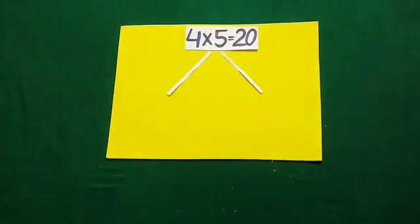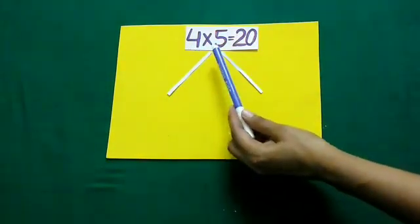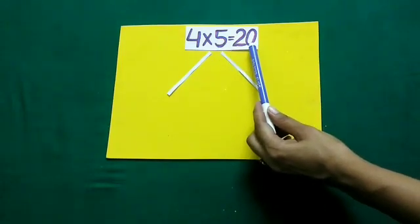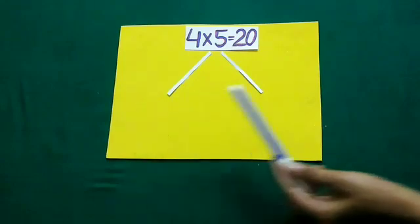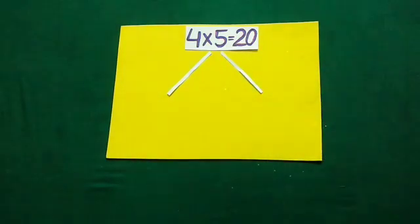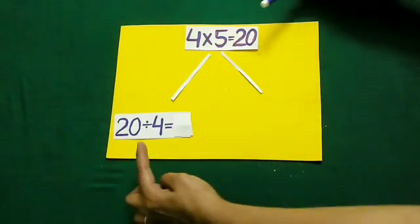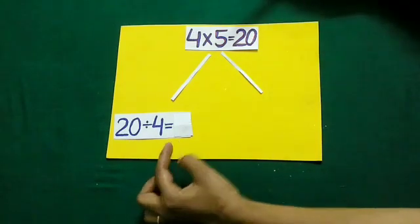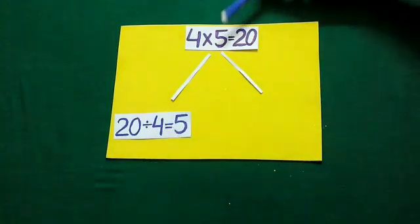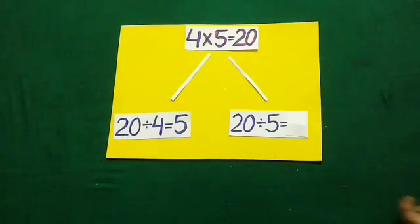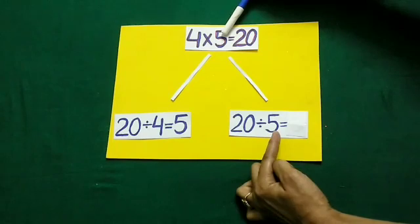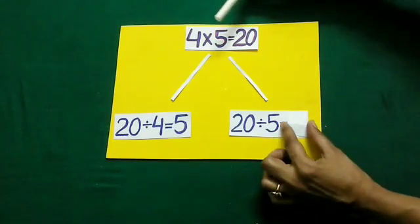Here we are given 4 multiplied by 5 is equal to 20. From this we have to write 2 facts of division. If we divide 20 with 4, the answer will be 5. Secondly, if we divide 20 with 5, the answer will be 4.